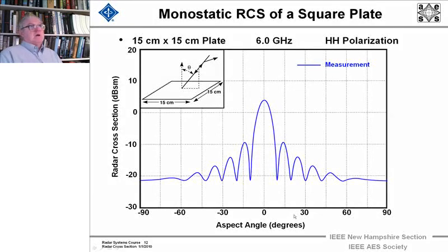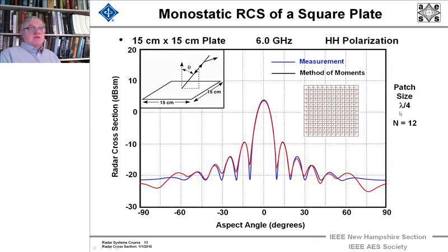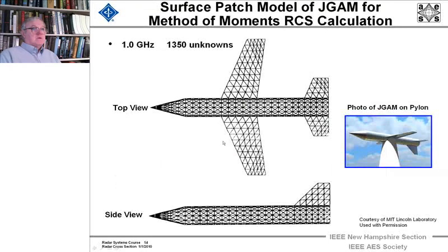Now, let's take that back to the monostatic RCS of a square plate, which we looked at earlier. And here we see the peak where the broadside peak where θ is zero, where the beam comes in and bounces off. But if you take an electromagnetic wave coming in at an angle, that's that angle θ, and we get roughly this shape right here for measurement. Now, then if we use the method of moments with a patch size of lambda over 4 and n equals 12, this right here would be the patch, the different little pieces of the patch model, you get pretty good accuracy and you get it pretty good out to the side lobes.